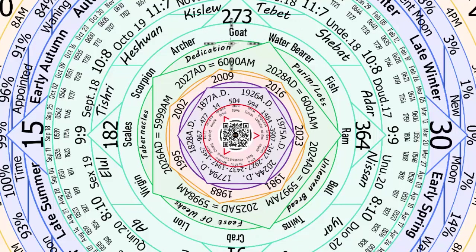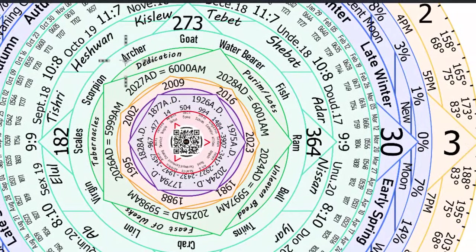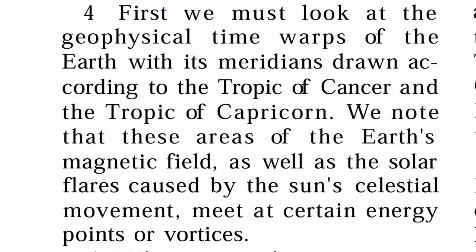The stars aligned on those particular days on Hanukkah and Pentecost. Enoch told us that in his book of the revolutions of the luminaries of heaven. These areas of the Earth's magnetic field, as well as the solar flares caused by the sun's celestial movements, meet at certain energy points or vortices — and they're aligned at those particular times.